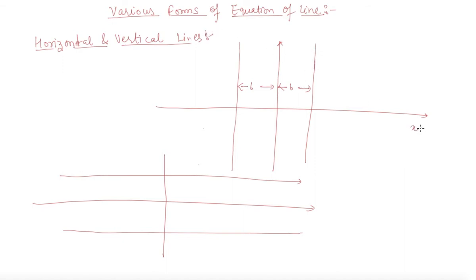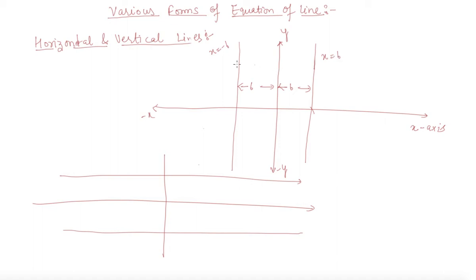I have drawn here the x-axis, y-axis, minus x, and minus y. If the line is parallel to the y-axis, then the equation of the line is x equal to b, or it can be x equal to minus b. If it is on the right-hand side, cutting the x-axis at some positive point, then it is x equal to b, and if it is cutting at a negative point, then it will be x equal to minus b.